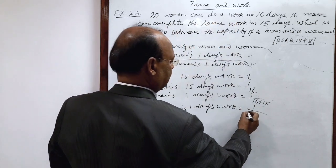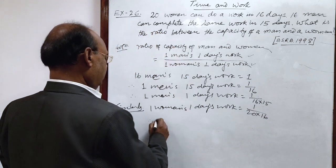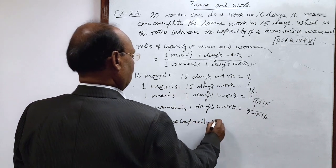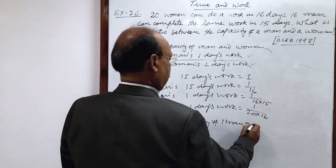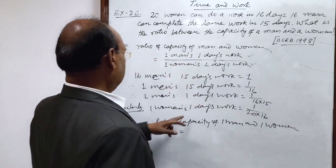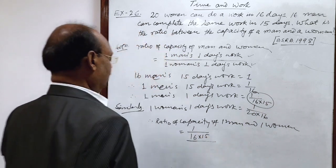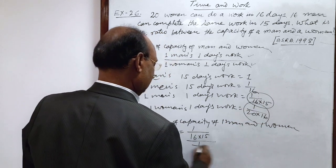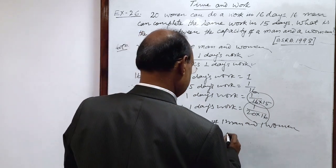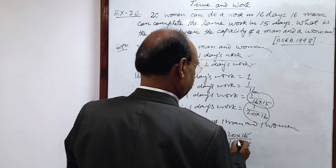Similarly, one woman's one day's work will be 1 by 20 into 16. So the ratio of capacity of 1 man and 1 woman is equal to 1 man's one day's work divided by 1 woman's one day's work, which is 1 by 20 into 16. After simplifying, this is equal to 20 into 16 divided by 16 into 15. 16 is cancelled out.